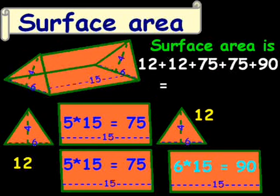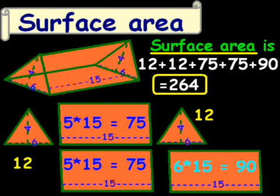So now all we have to do is write all these numbers down and add them together, and then we get our total surface area. So I have 12 here, plus 12, that equals 24, plus 75, that's going to equal 99, plus another 75, which is going to equal 174, and then plus 90, which equals a grand total of 264. And that is our surface area.